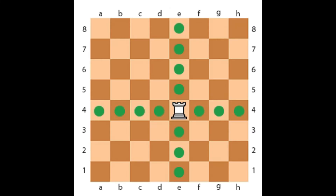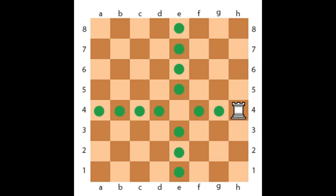The rook may move in a straight line, only forward, backward, and to the sides.